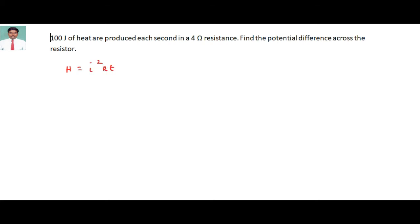Imagine a circuit that contains a resistance with a value of 4 ohms, connected to a potential difference V that I have to find.